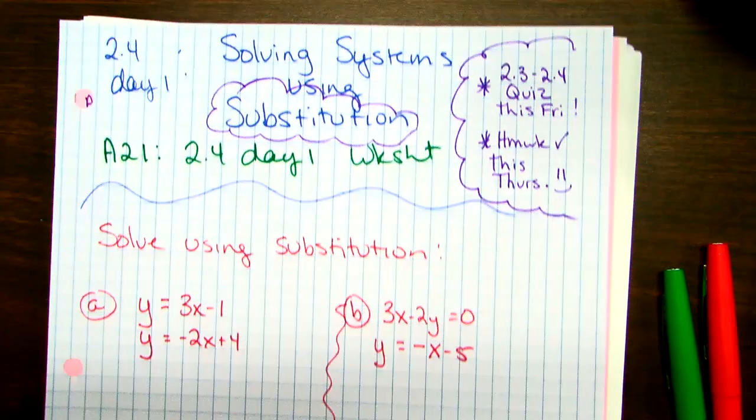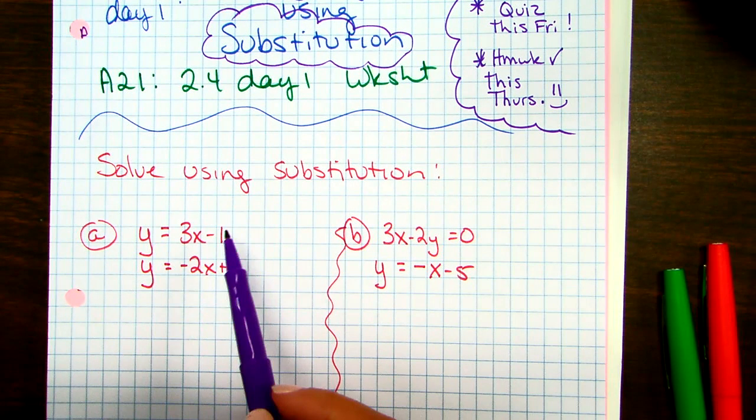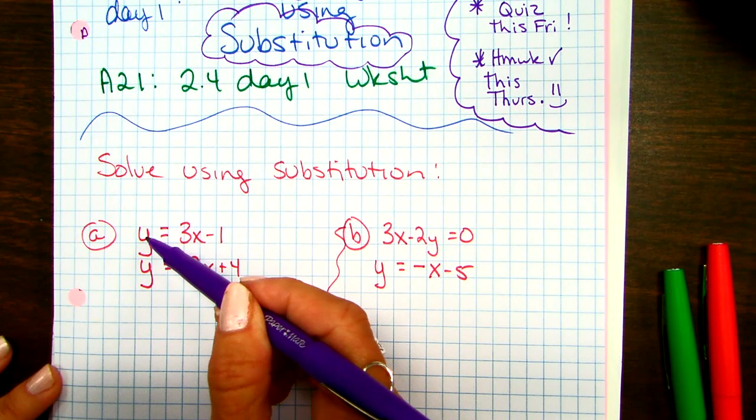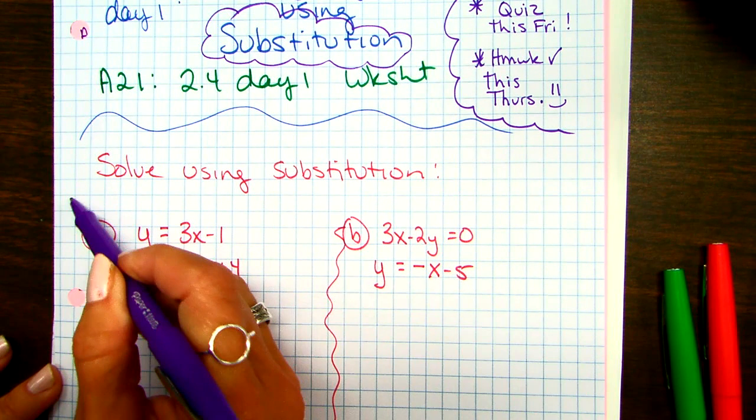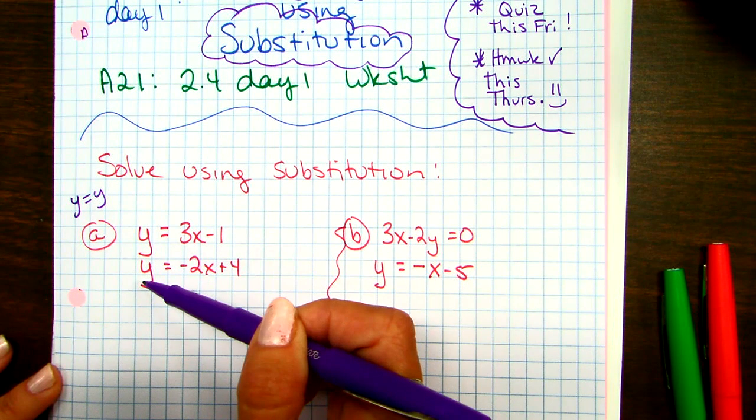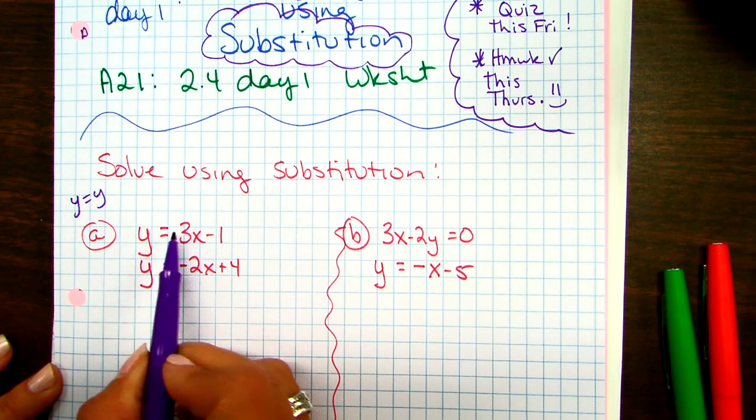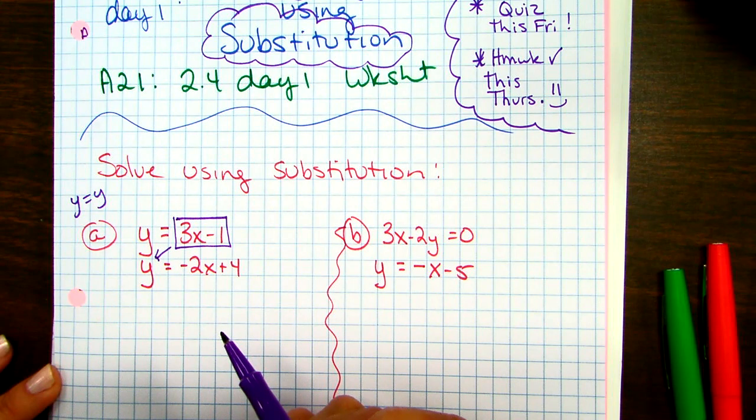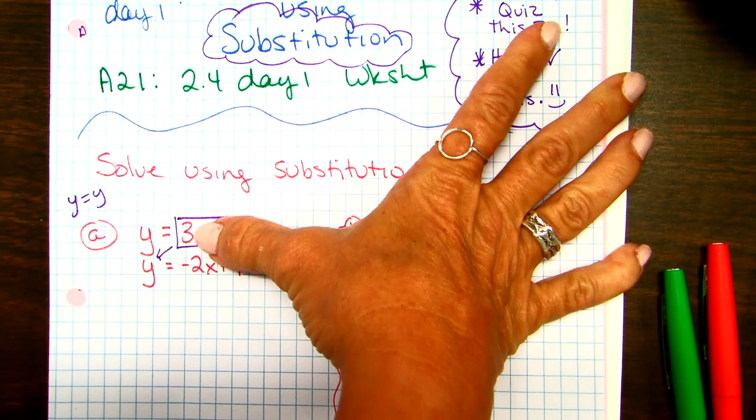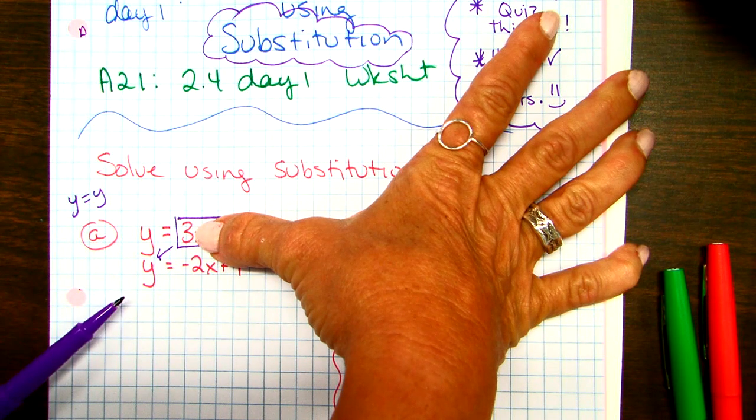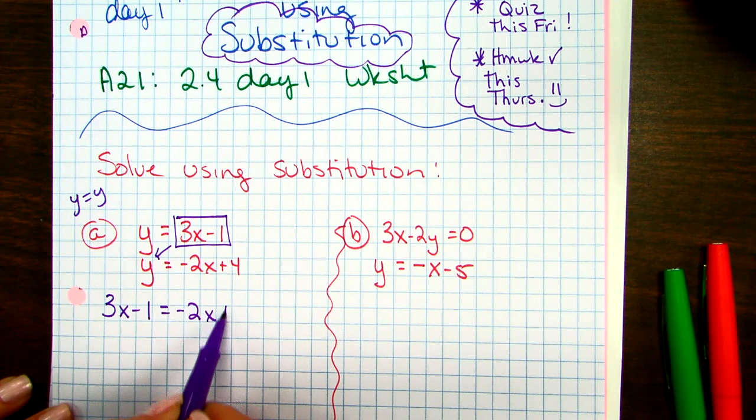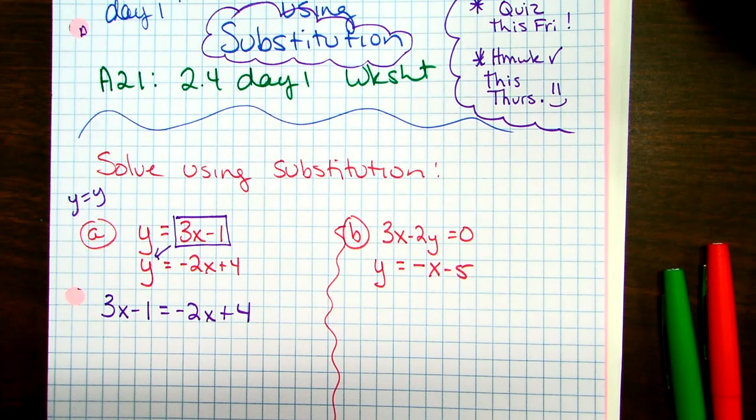So there's really two types of substitution problems, and here are the two types. What I want you guys to think of with substitution is you're replacing something with something else. In this one, I think you guys would agree that Y equals Y. They are the same thing. So if Y equals Y, then these also equal each other. In other words, I'm basically just taking all of 3X minus 1 and plugging it in for Y in the other equation.